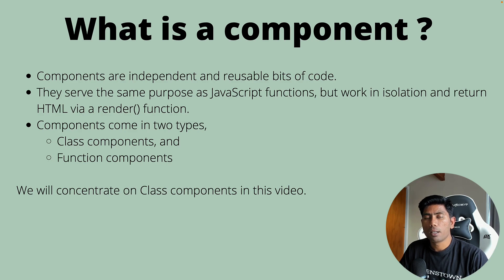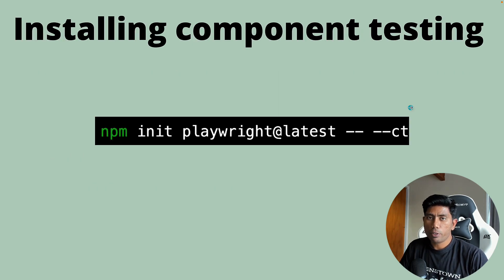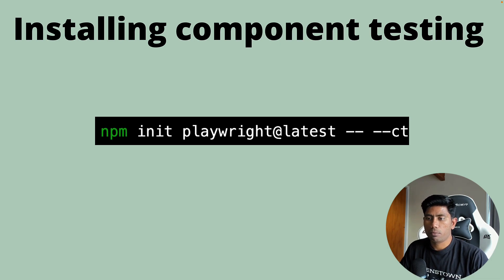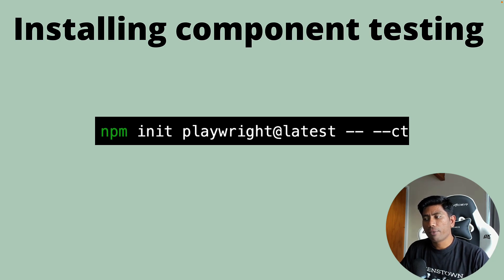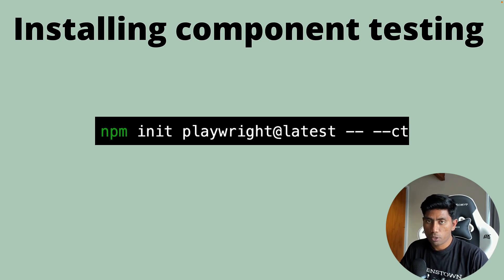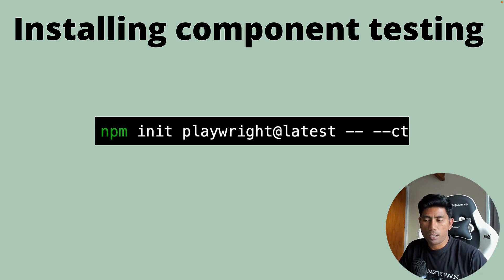The one we are going to be discussing in this video is the class components, not the function components. We'll see how class components can be tested much more efficiently using the component testing option available in Playwright. The first thing we need to do is install a new experimental feature called the --ct option.